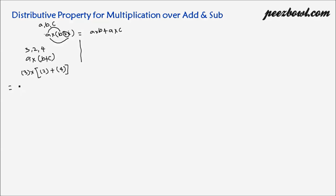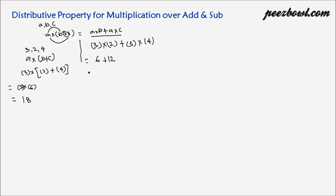This is equal to 3 multiplied by 2 plus 4, which is 6, giving us 3 multiplied by 6 equals 18. Now we go to our right hand side: a multiplied by b, that is 3 multiplied by 2, plus a multiplied by c, that is 3 multiplied by 4. This is equal to 6 plus 12, which is 18.